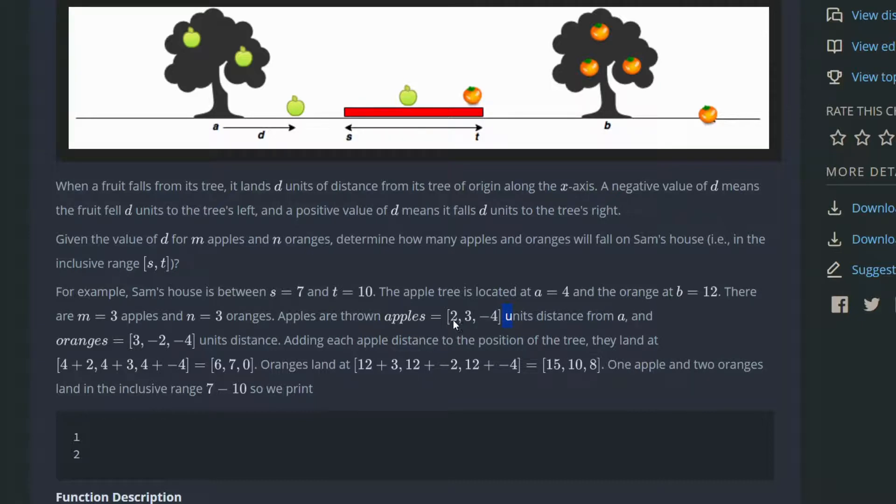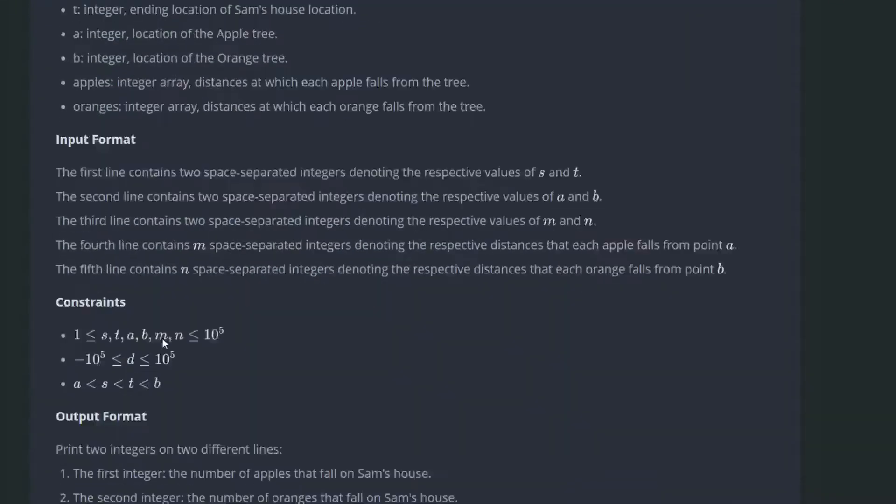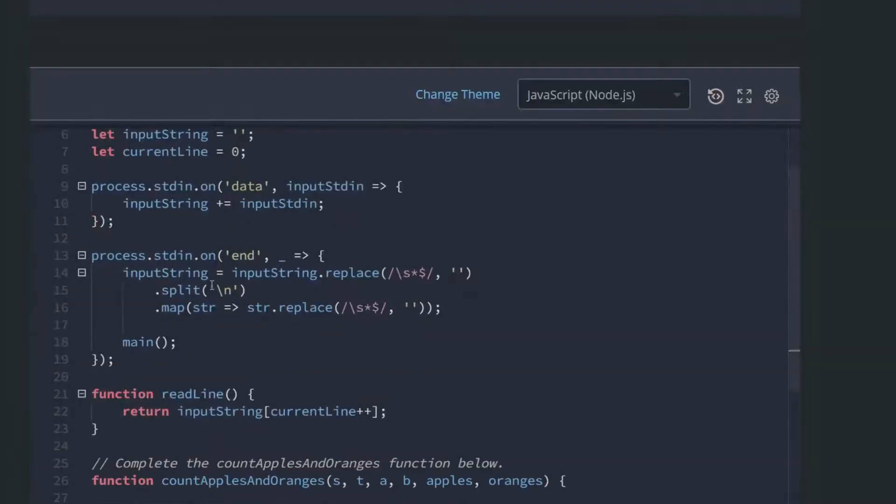For this example, 2 plus the position of A is 6. 6 is not in Sam's house. For this one, 3 plus 4 is 7, so it's in Sam's house. This one, minus 4 plus 4 is 0, it's not in Sam's house, so the result is 1. You can do the same for B, the result is 2. I think this is fairly simple.